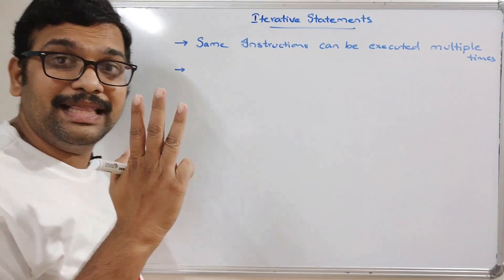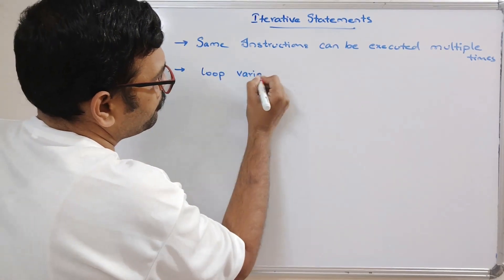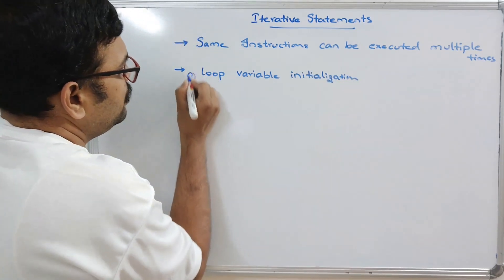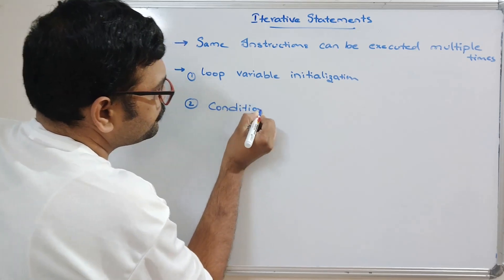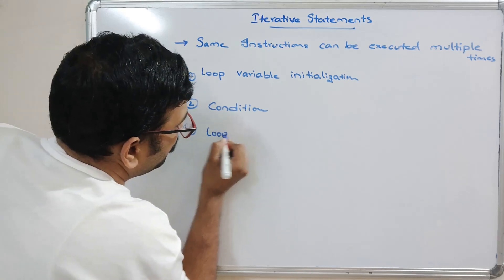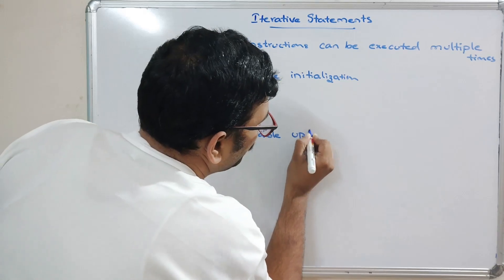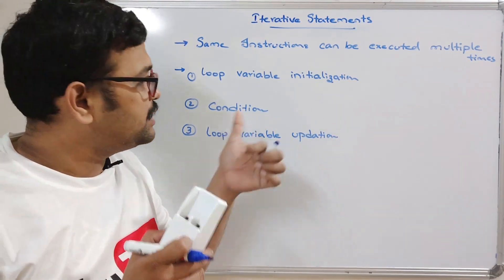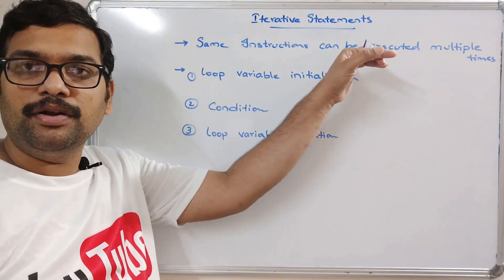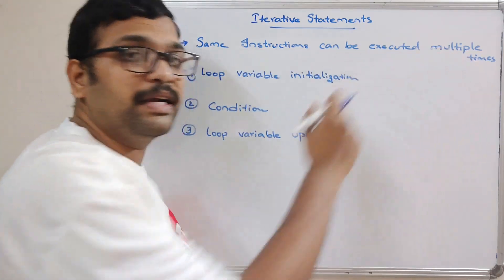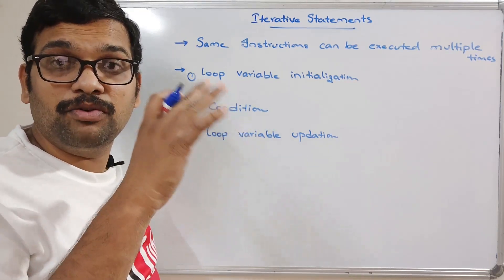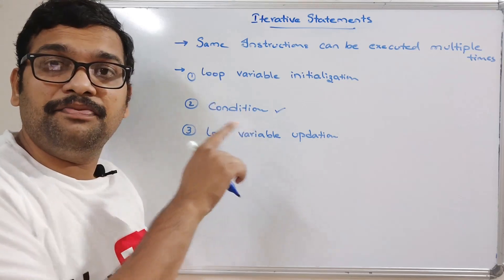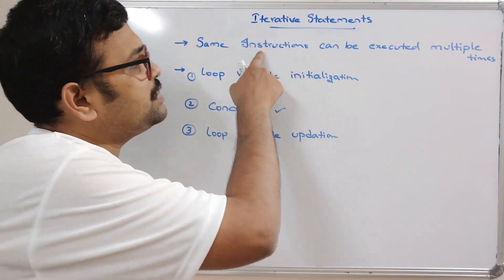For all iterative statements, we have to follow three things: first is loop variable initialization, second is the condition, and third is loop variable updation. We need to initialize a loop variable and then write a condition. The condition is meant for terminating the execution. The same instructions can be executed multiple times, but after some iterations we have to terminate — we have to stop. So until the condition becomes false, the instructions will keep on executing.